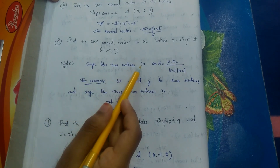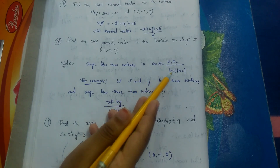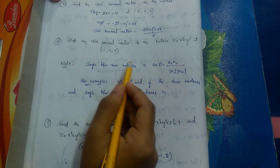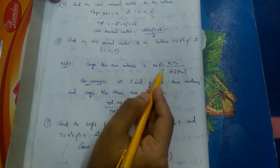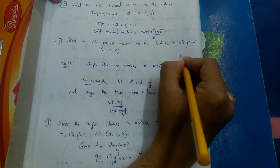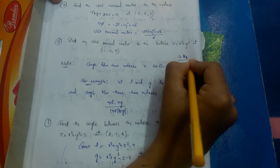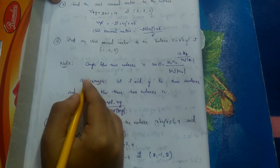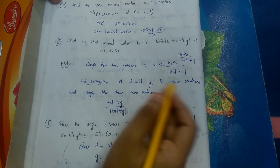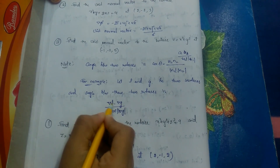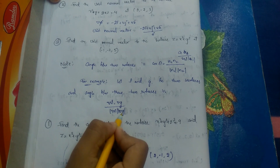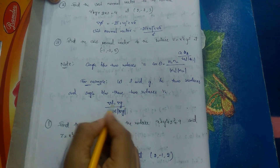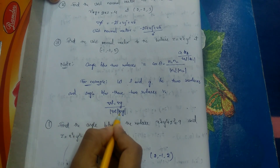The note point: the angle between two surfaces is cos θ = (∇f · ∇g) / (|∇f| |∇g|). This is analogous to the angle between two vectors: cos θ = (a̅ · b̅) / (|a̅| |b̅|). Let f and g be two surfaces; the angle between them is found using cos θ = (∇f · ∇g) / (|∇f| |∇g|).